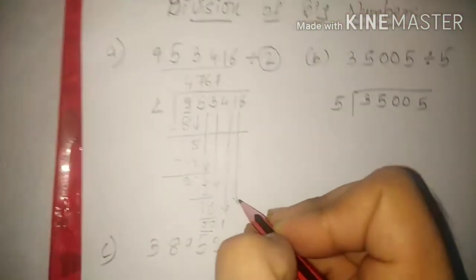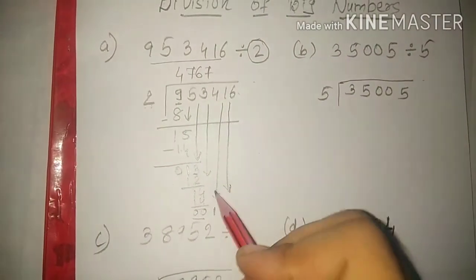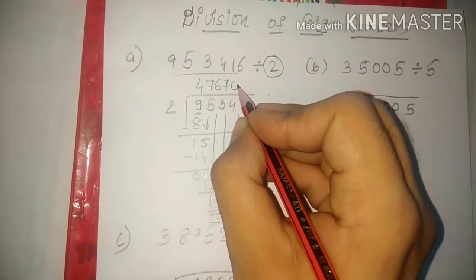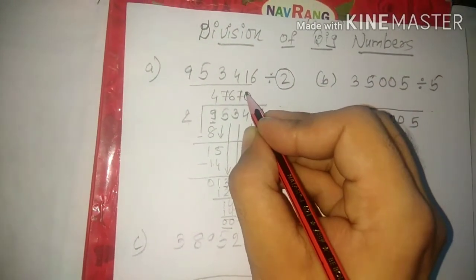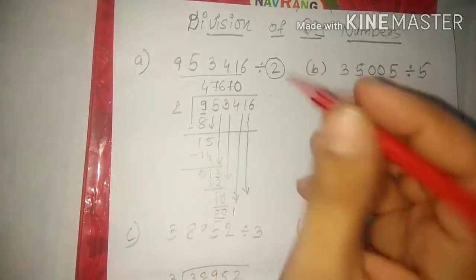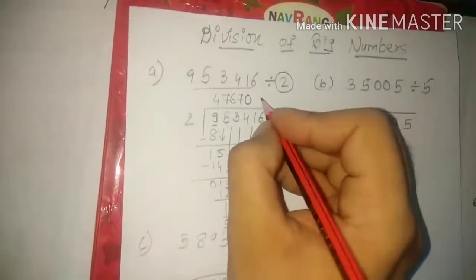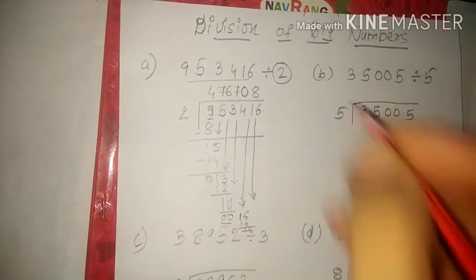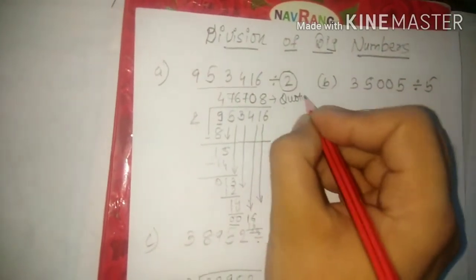Now six comes down, making sixteen. Two eights are sixteen. Remainder zero. So your answer is this, and this answer is known as the quotient. Let's do the next sum, students.